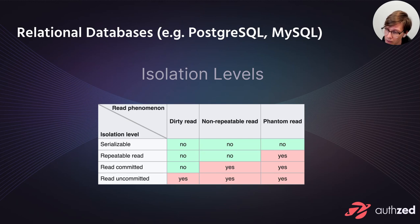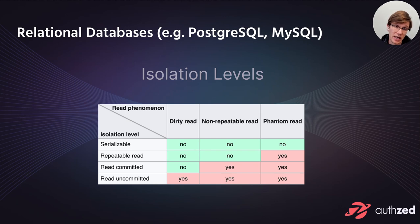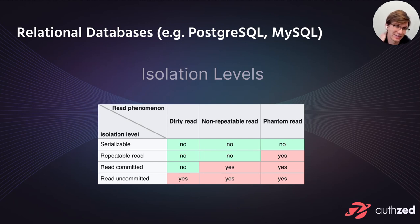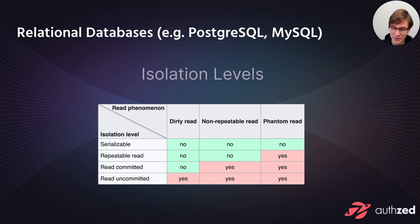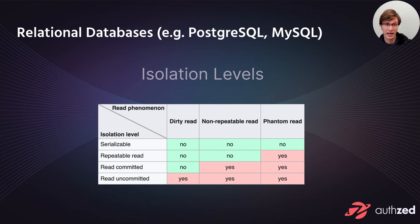Non-repeatable reads occur when you're inside a transaction and another committed transaction modifies data you've already read — if you re-read that data, you'll see it updated within your transaction. This breaks the atomicity that many people think transactions provide. This is actually possible at the read committed isolation level, which is the Postgres default. So by default in Postgres, this is totally a scenario that can happen to you — even though that's probably shocking, since you'd expect to be reading from a consistent snapshot.